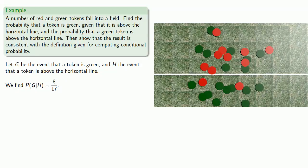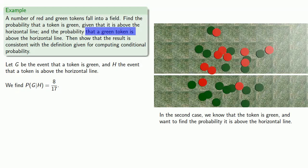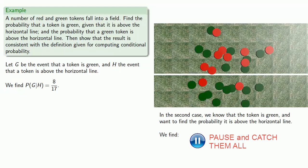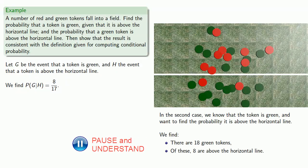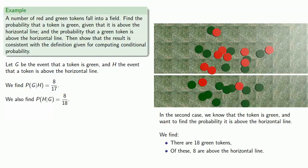In the second case, we know that the token is green and we want to find the probability it is above the horizontal line. Taking a close look at our picture, we find there are 18 green tokens, and of these, 8 are above the horizontal line. So the probability a token is above the horizontal line given that it's green is 8 out of 18.